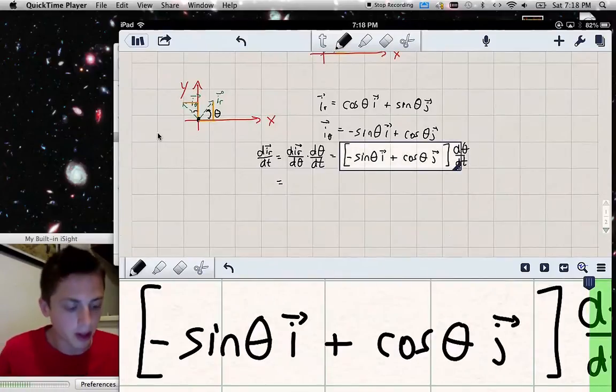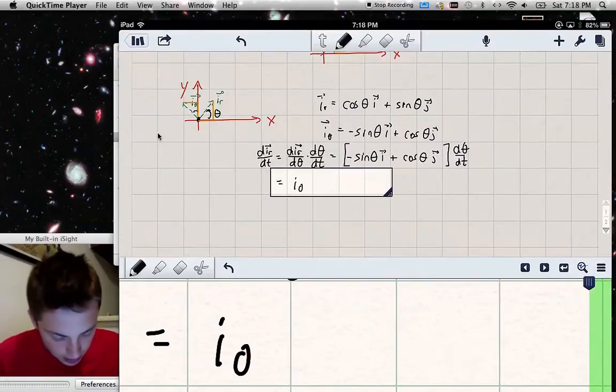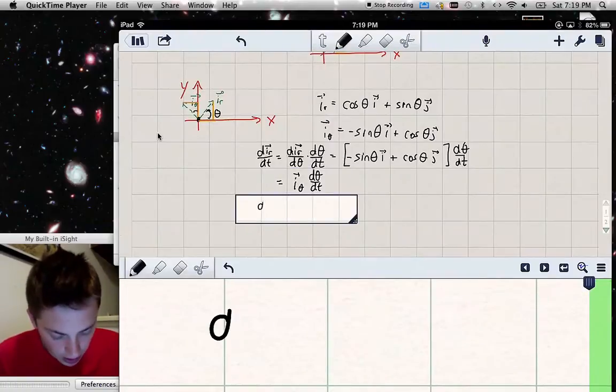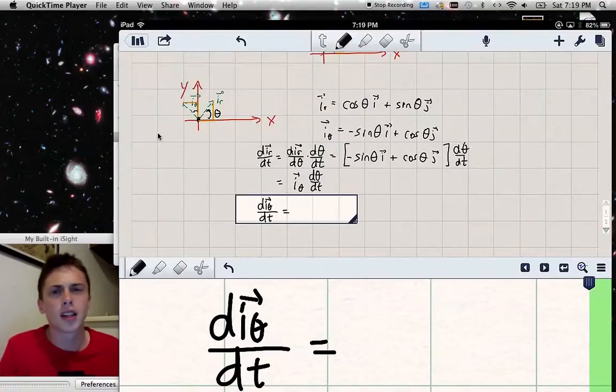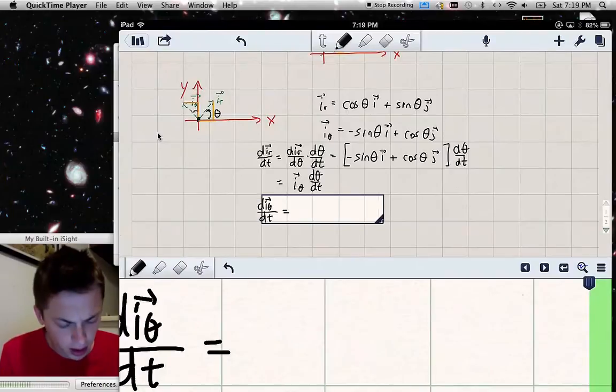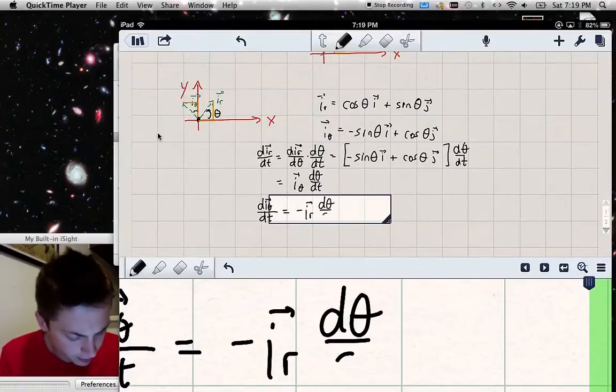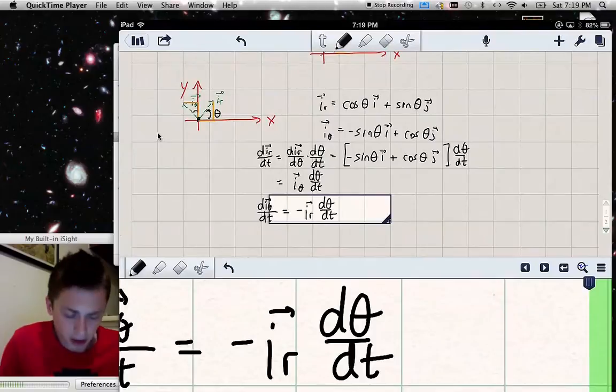And now that is equal to, well, this quantity in brackets is just i_theta, so I write i_theta, the derivative of theta with respect to time. Good. And now I can do the same for i_theta. Take the derivative of i_theta with respect to time. Do it on your own. So it's not that bad, but you'll find that it's negative i_r d theta dt. So hopefully you're able to show that as well.